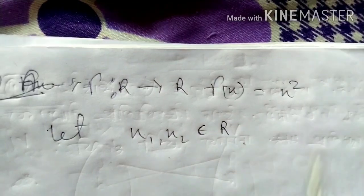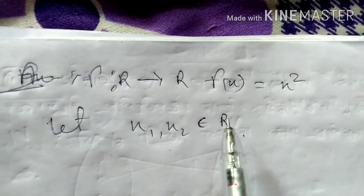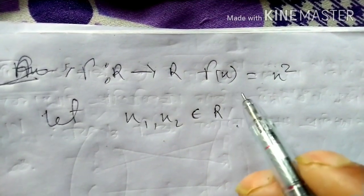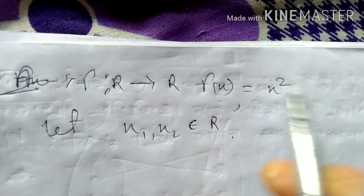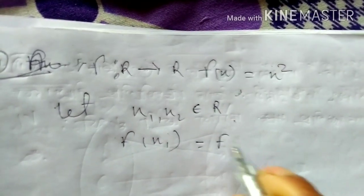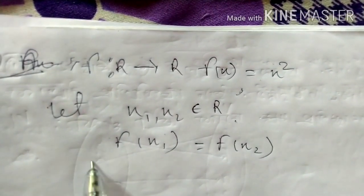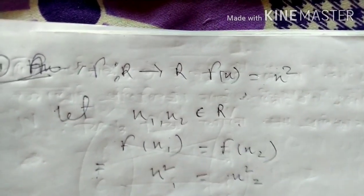This is the injective method. f of x is equal to x squared. Let x1, x2 belong to r. f of x1 is equal to f of x2, so x1 squared is equal to x2 squared, meaning x1 is equal to x2.